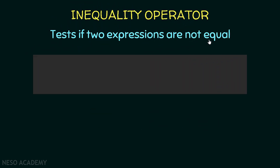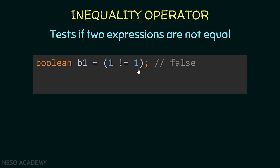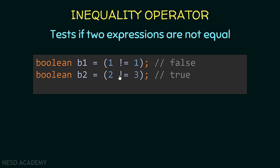Now let's see the inequality operator. It is used to test if two expressions are not equal. I'm initializing b1 to be equal to (1 != 1). I'm testing if one is not equal to one — this is false because one is equal to one, so b1 will be equal to false. For another example, I'm comparing if two is different than three. This is true because two is not equal to three, so b2 will be equal to true.